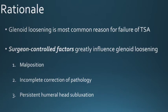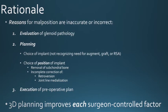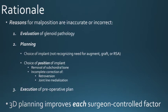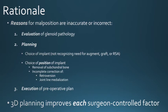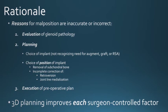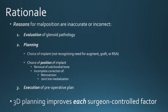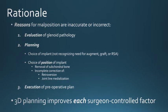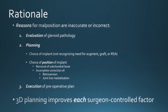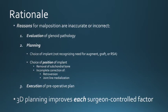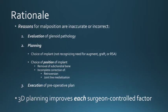Reasons for malposition can be broken down into three broad categories. The first includes evaluation of the glenoid pathology. The second includes preoperative planning — such as not recognizing the need for more than a standard implant, choosing the wrong implant position, removing too much subchondral bone, residual retroversion, or excessive joint line medialization. The third broad category includes execution of the preoperative plan.